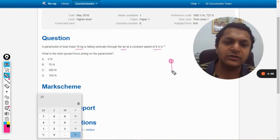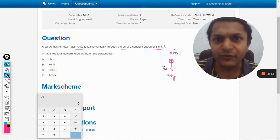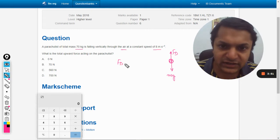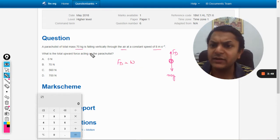So let us say this is that body, or you can call it the parachutist. This is the weight, so there has to be an equal and opposite drag force in the upward direction. So it only means that F_d should be equal to weight.